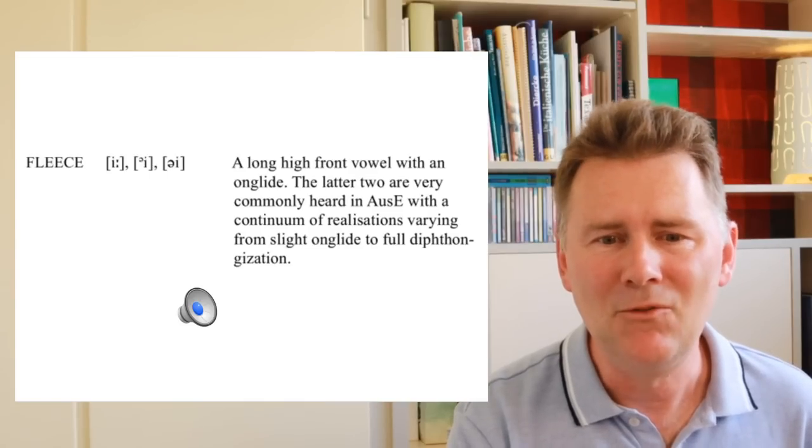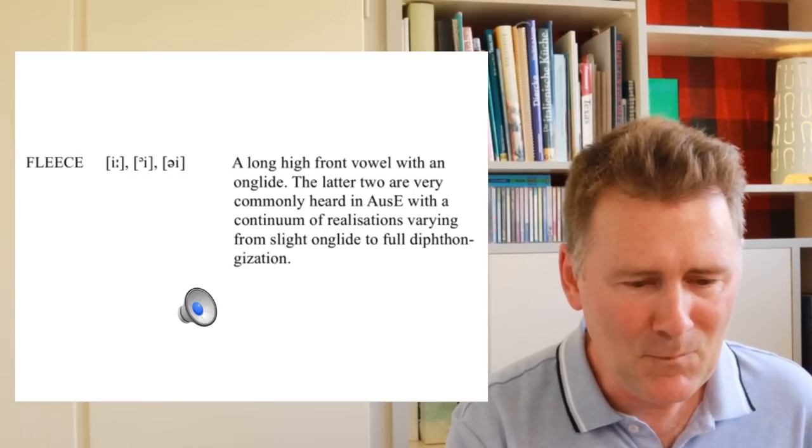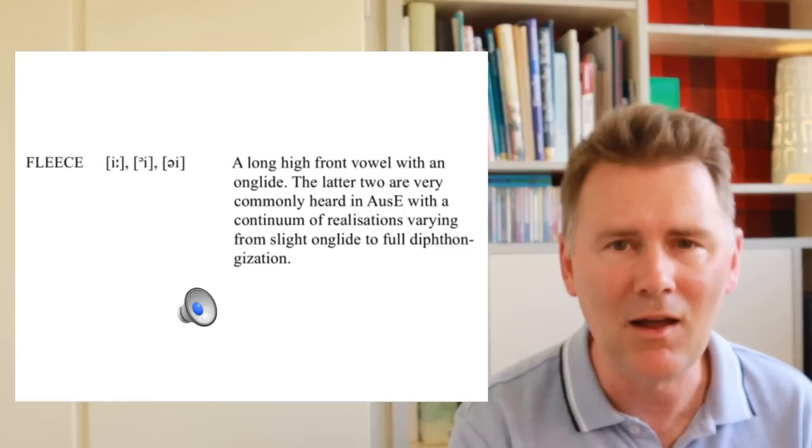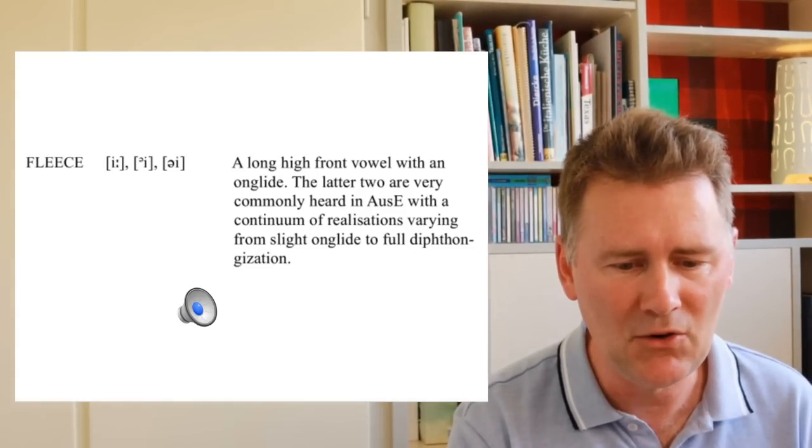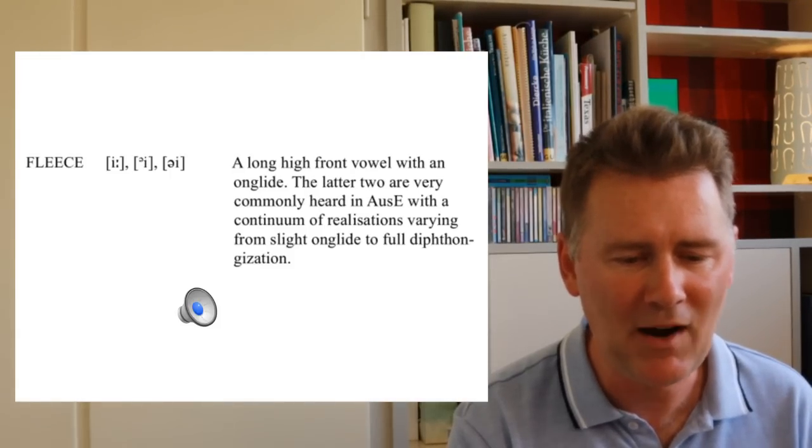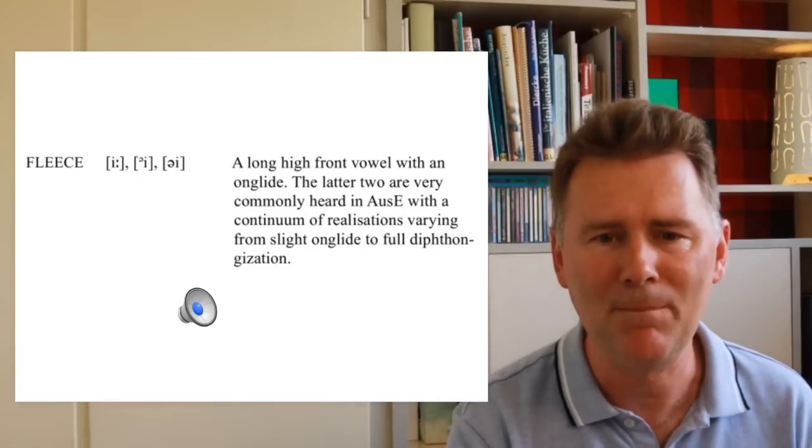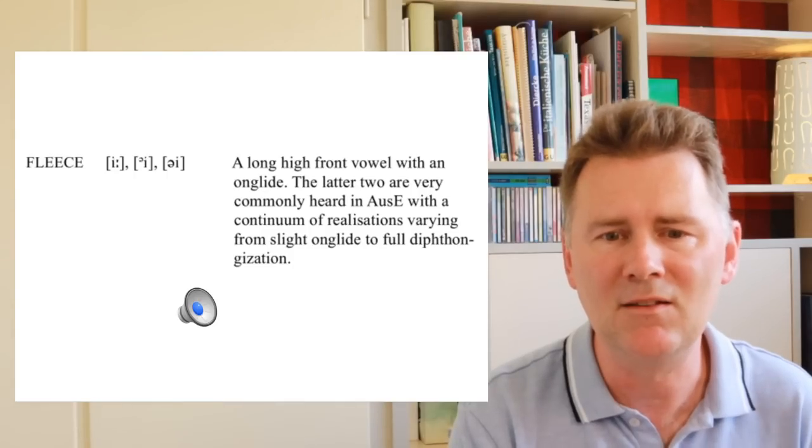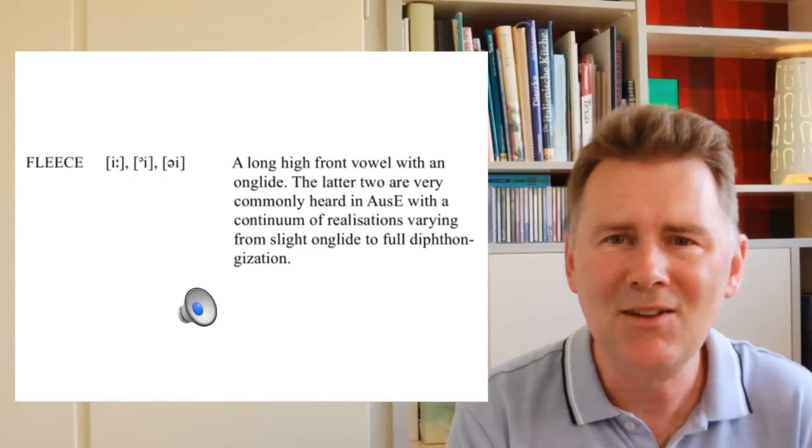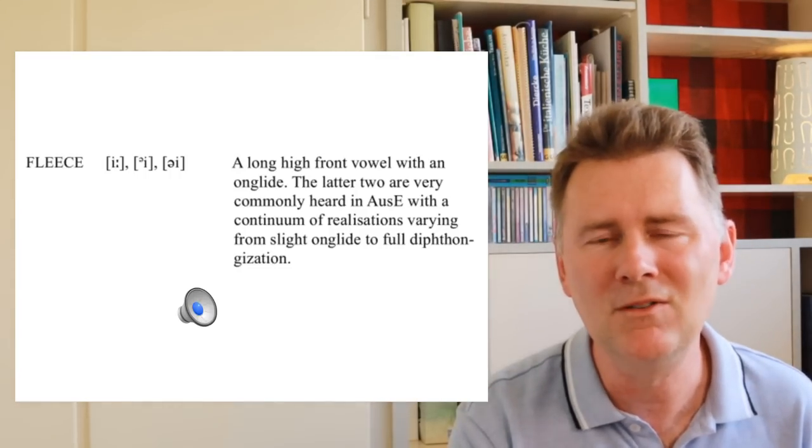So the Handbook recognizes that there is variation in the fleece vowel. What it says is that it's a long high front vowel with an on glide. The latter two are very commonly heard in Australian English with a continuum of realizations varying from slight on glide to full diphthongization. Okay, so the same speaker will realize this sound a little differently in different words. That doesn't make our job as linguists any easier, but it is nonetheless important to realize.